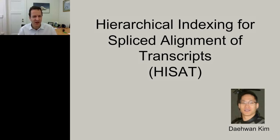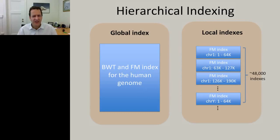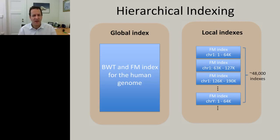That idea is implemented in HiSat—Hierarchical Indexing for Splice Alignment of Transcripts. The approach creates a global index using a Burrows-Wheeler Transform with FM Index for the whole human genome, then creates 48,000 additional local indices, each covering only 64 kilobases, tiling the genome end-to-end with 1 KB overlap. After clever optimizations, Daehwan Kim got this to fit into just 4.3 gigabytes for the human genome—runnable on a standard desktop.